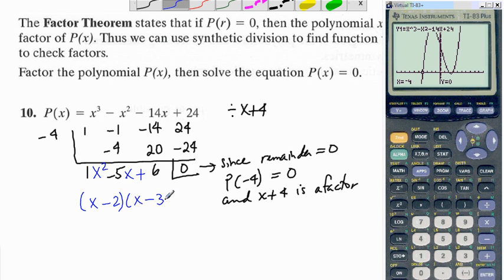And that factors into x minus 2 times x minus 3. And we can verify by seeing that when x is 2, y is 0. And when x is 3, y is 0.